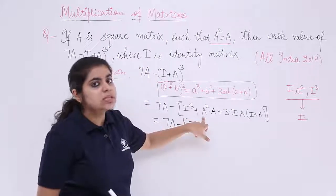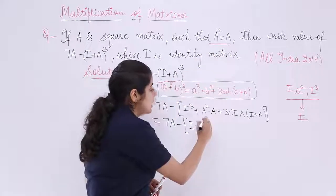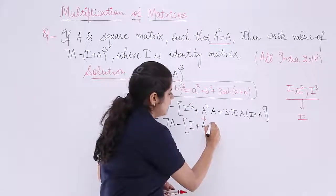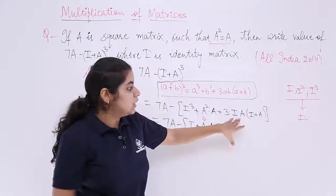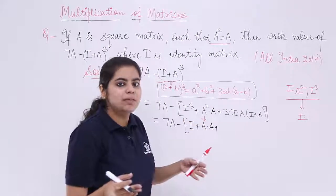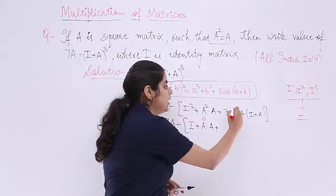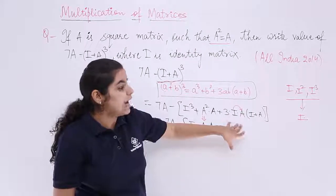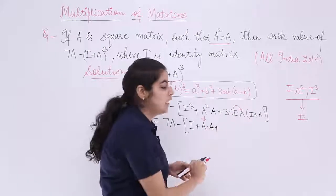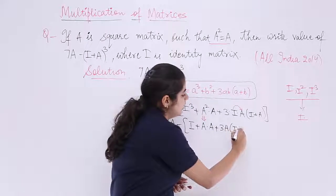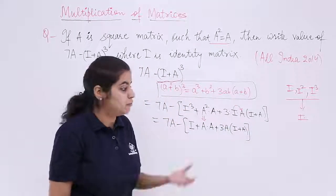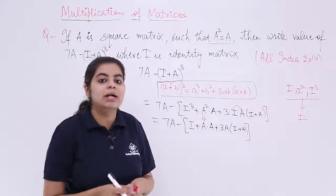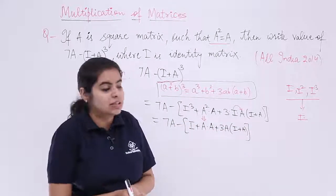What about A²? As per the question, A² = A, so I replace A² with A. Then 3 × I × A: since I × A = A (multiplying by the identity matrix doesn't change the value), this becomes just 3A. In the bracket we still have (I + A).